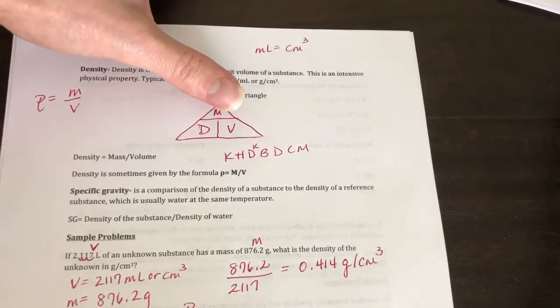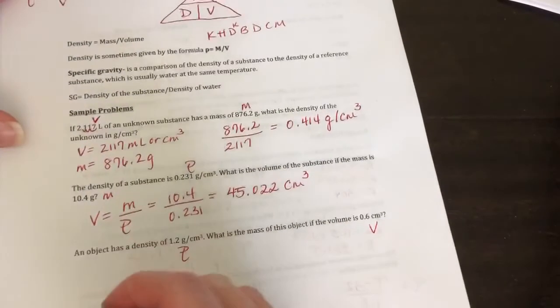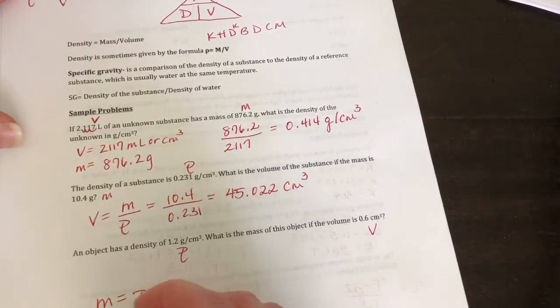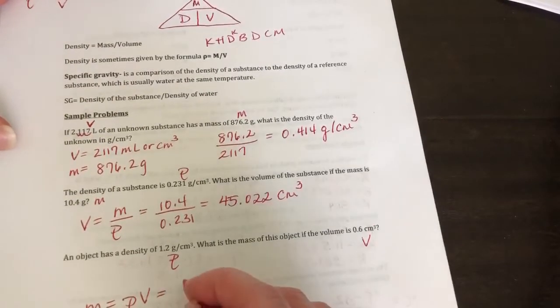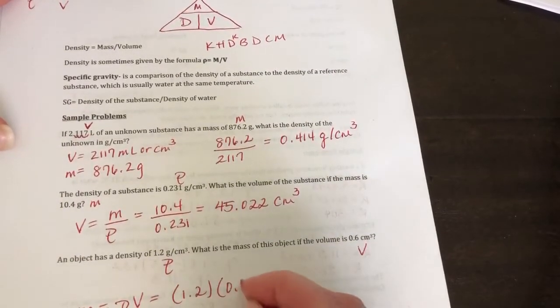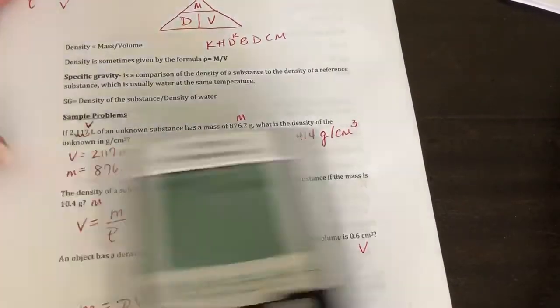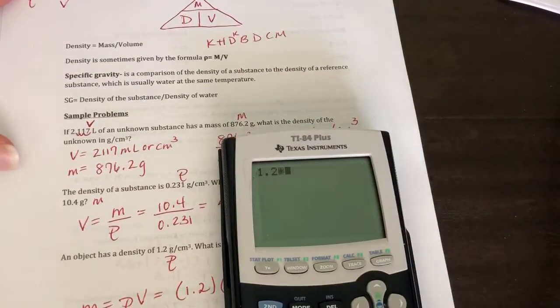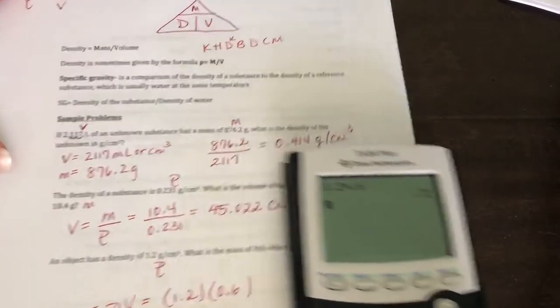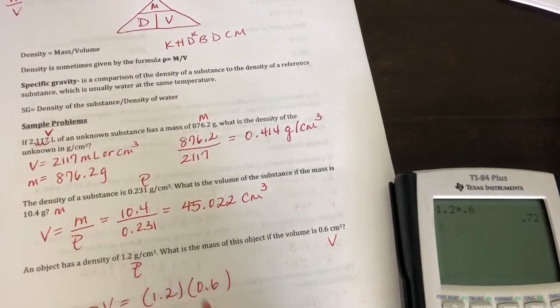So if I go to my triangle, cover up mass, you get density times volume. So mass is equal to density times volume. Your density is 1.2. Your volume is 0.6. Okay, so if I multiply those two numbers together, it's 0.72. And I should be in grams.